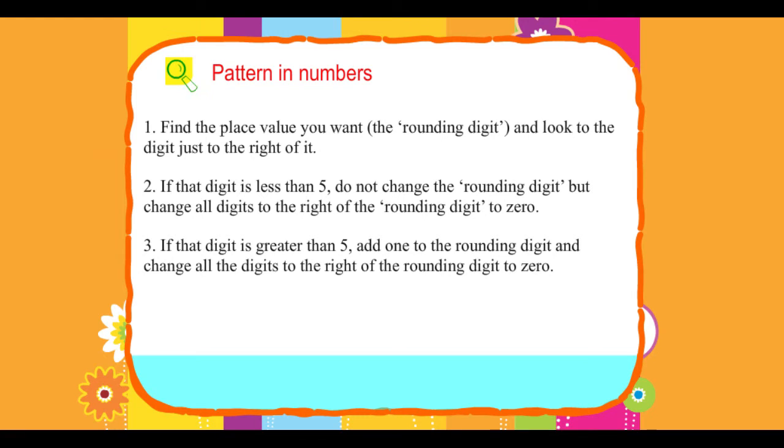3. If that digit is greater than 5, add one to the rounding digit and change all the digits to the right of the rounding digit to zero.